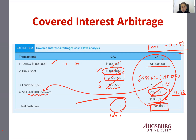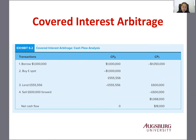No investment, and you have $18,000 — this is an arbitrage opportunity; this is free money. So if interest rate parity is violated, there is a way to obtain an arbitrage opportunity. This is called covered interest arbitrage.